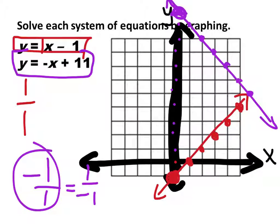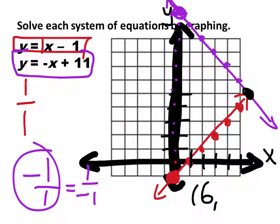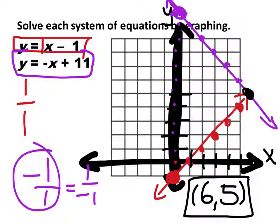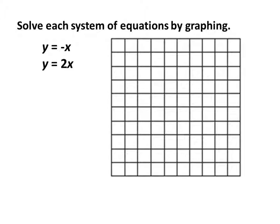This one doesn't show that they intersect on the graph, but you can tell that this line would intersect right here. That point would be 1, 2, 3, 4, 5, 6 across and up 1, 2, 3, 4, 5. We'll get to the standard form once in a second.